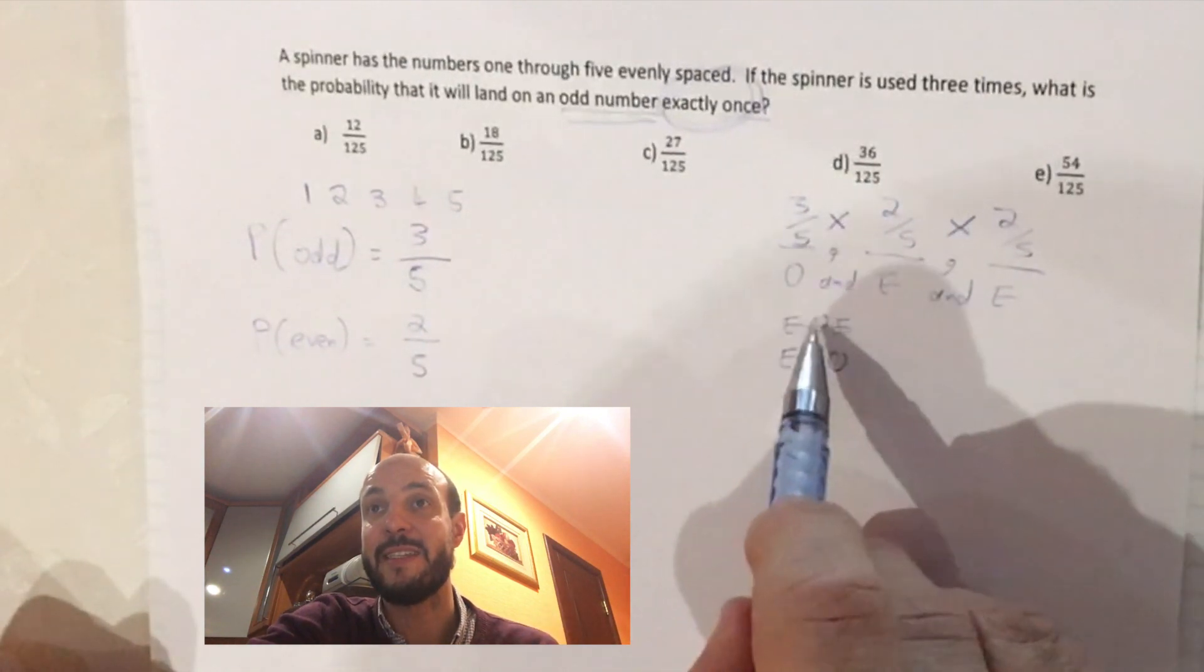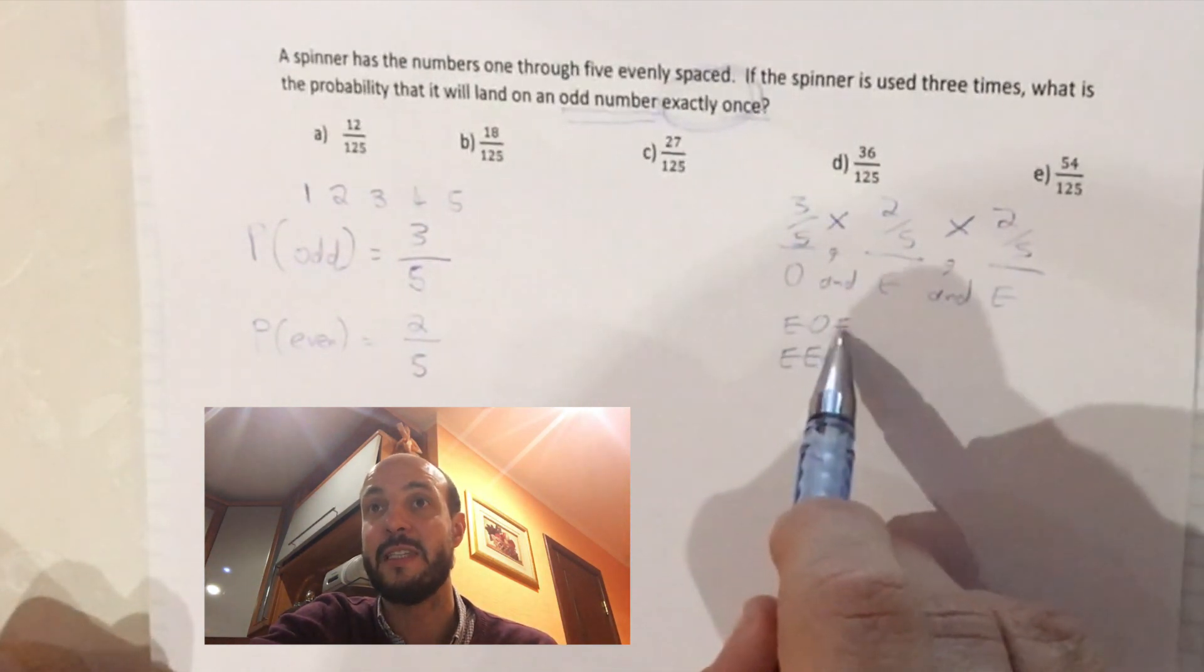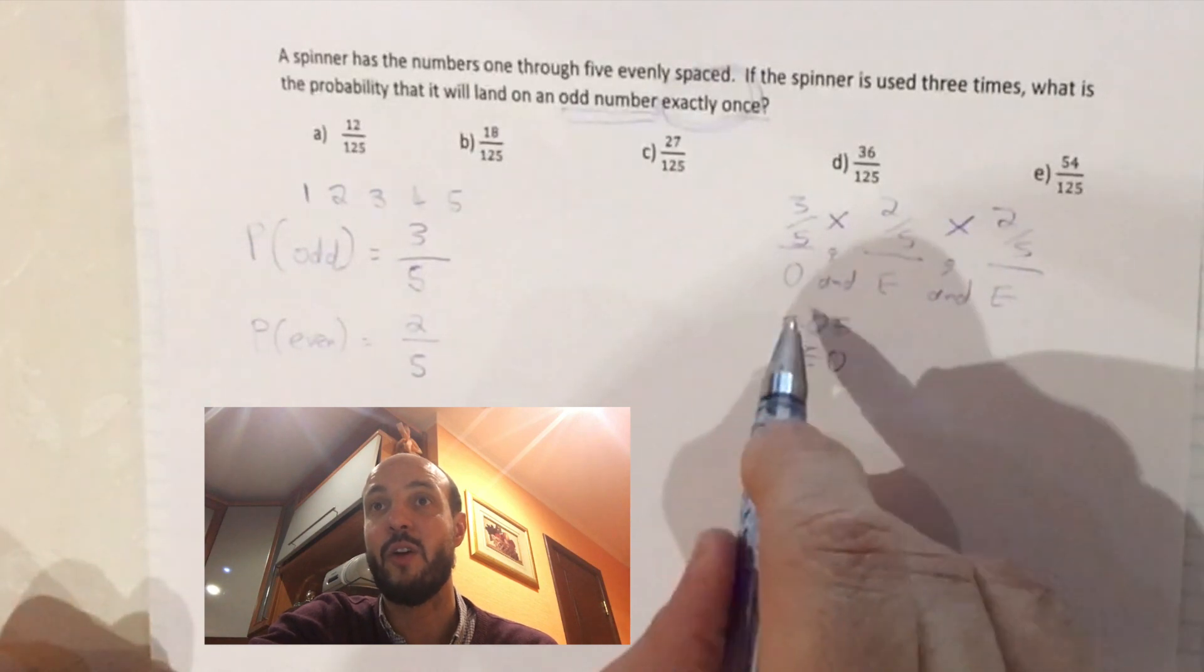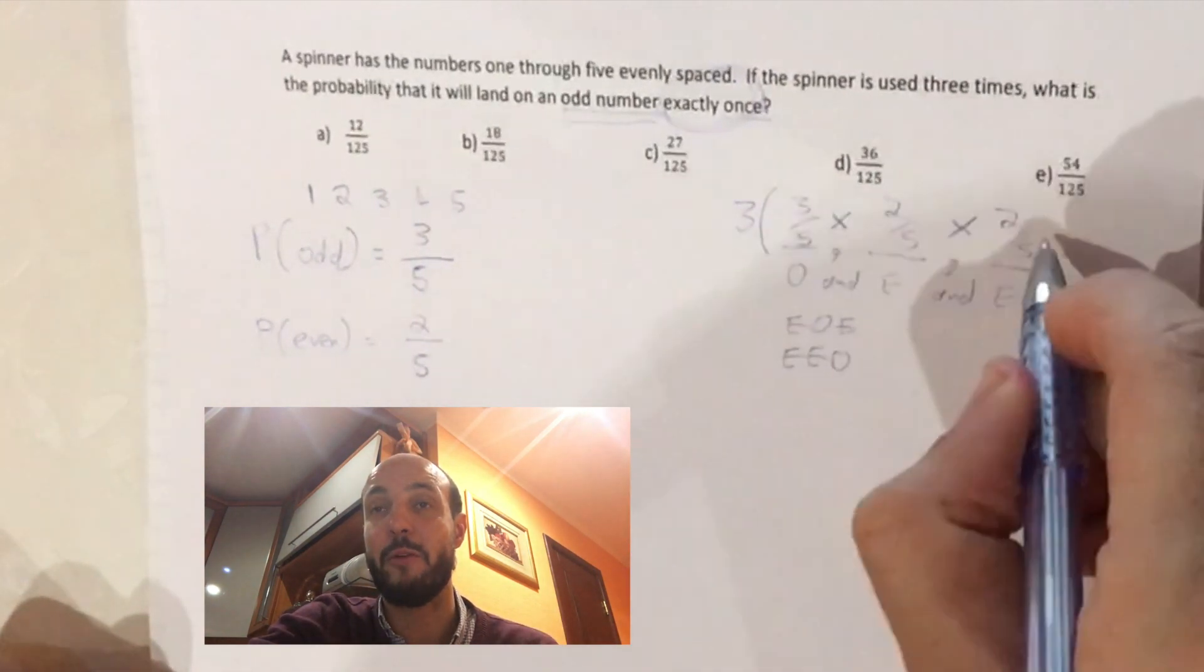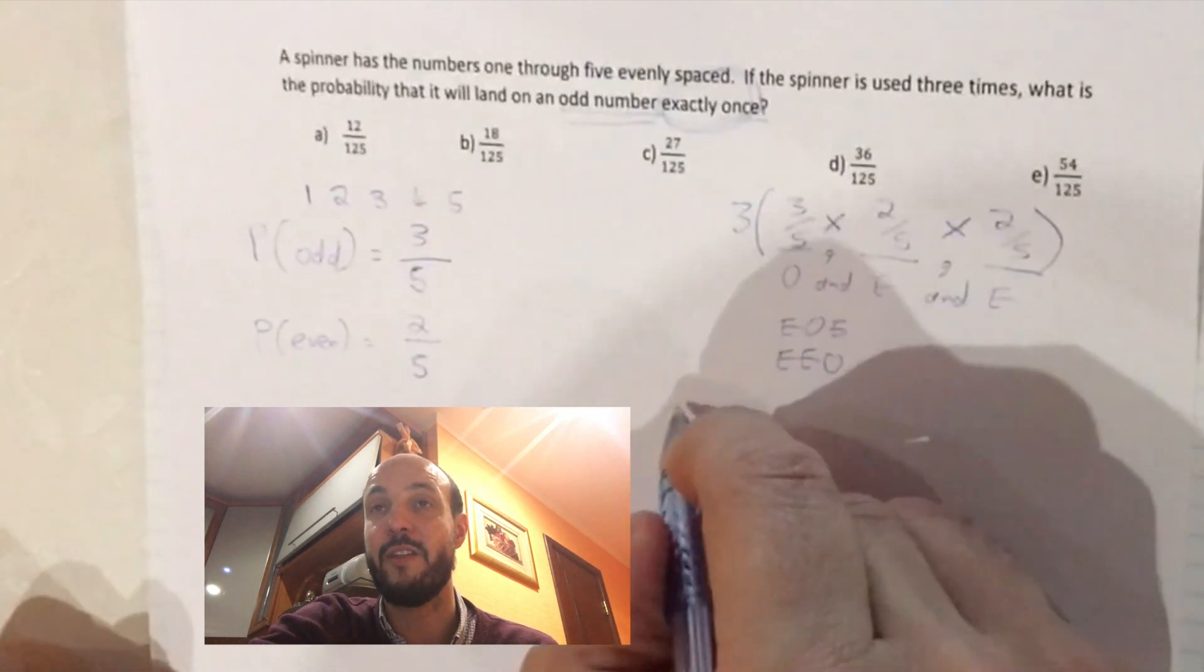Now it might not be the first one that's odd, it could be the second or the third one. We've got 3 possibilities: odd-even-even, even-odd-even, or even-even-odd. So we have to multiply this probability by 3 for these 3 different things that can happen.